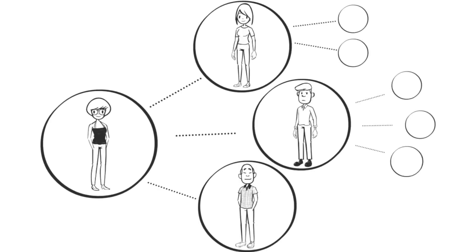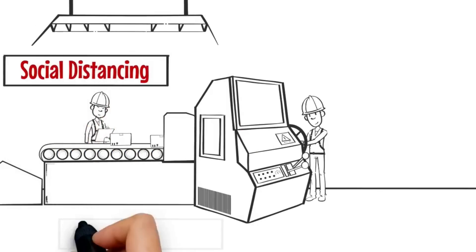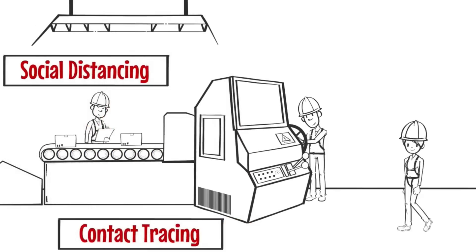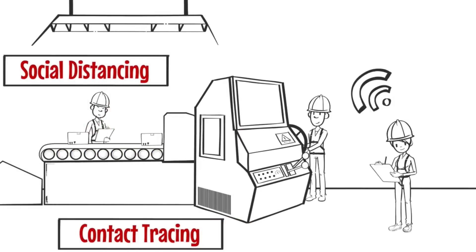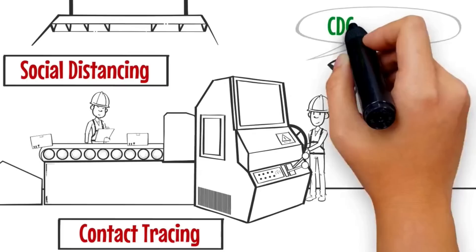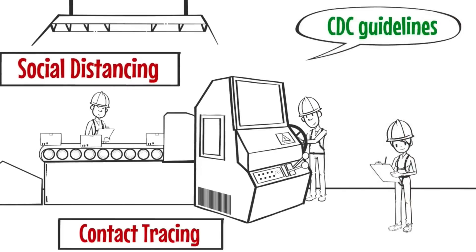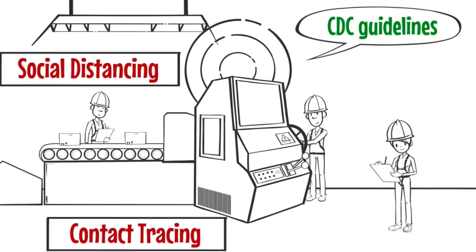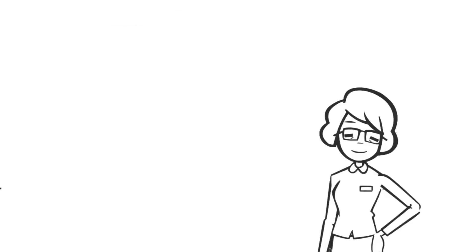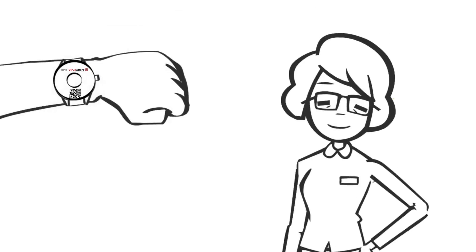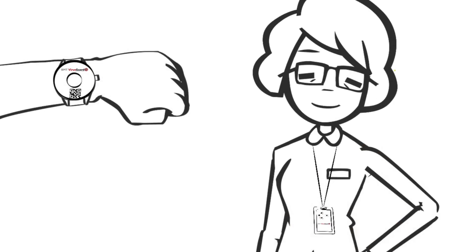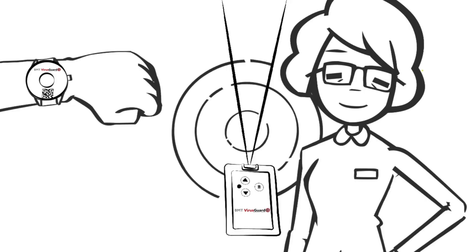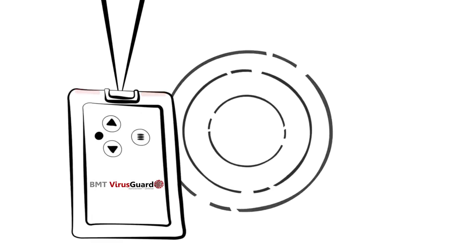The BMT VirusGuard Social Distancing and Contact Tracing Solution uses a wireless device worn by employees to help enforce CDC guidelines for social distancing and automate contact tracing. The tag is worn as a wrist strap, pendant, or key fob and detects proximity of other tags when people come within 6 feet of each other for a period of time. The device alerts the wearer and a record of the contact is made in the BMT VirusGuard software system.